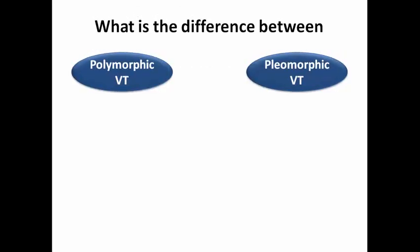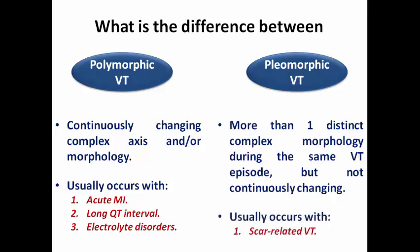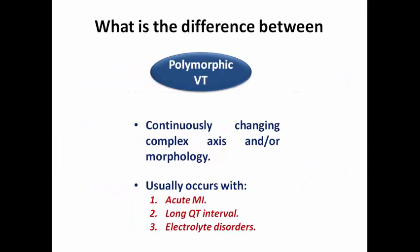The difference between polymorphic and pleomorphic VT: polymorphic shows continuous change in complex axis and morphology, and usually occurs with acute MI, prolonged QT interval, or electrolyte disorders. Pleomorphic VT shows more than one distinct complex morphology during the same episode but without continuous axis change — it usually occurs with scar-related re-entrant VT and is not common in acute MI.